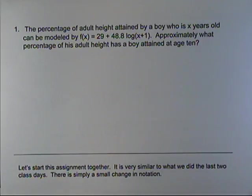The percentage of adult height attained by a boy who is x years old can be modeled by f(x) = 29 + 48.8 log(x+1). Approximately what age—